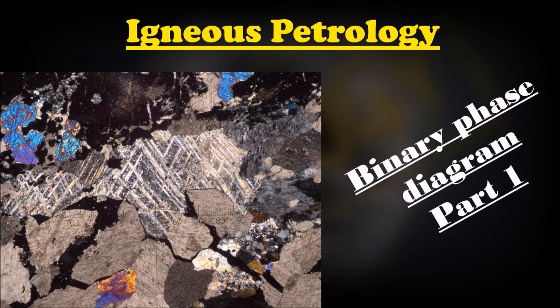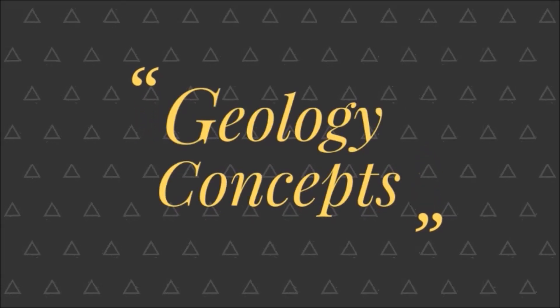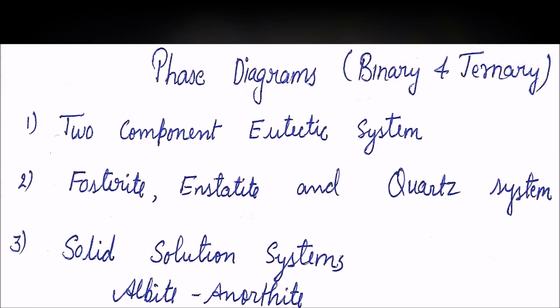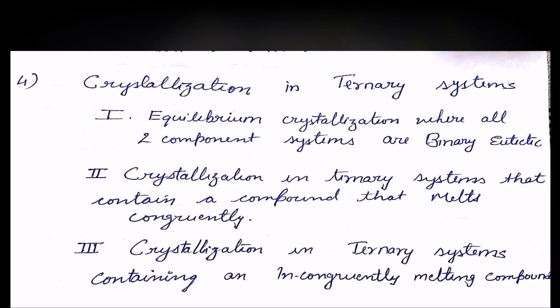This series will cover phase diagrams: binary and ternary. The two-component eutectic system, then the forsterite-enstatite and quartz system due to incongruent melting, and third, solid solution systems of albite and anorthite. For the ternary system we'll cover equilibrium crystallization, crystallization in ternary systems containing a congruently melting compound, and a ternary system containing an incongruently melting compound.